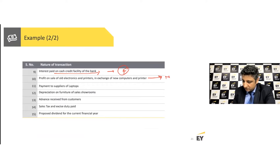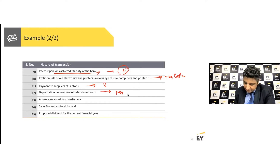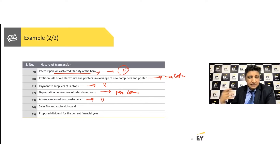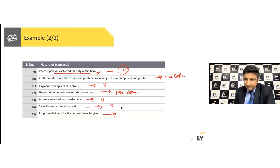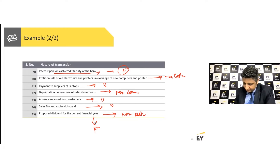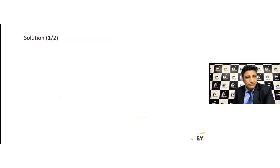Payment to suppliers — operating. Depreciation — non-cash, excluded. Advance received from customers — this could be operations as it happens in the normal course. Sales tax and excise duty — operations. Proposed dividend is essentially non-cash, but even if you pay a dividend, that payment would be a financing activity, not an operating activity.